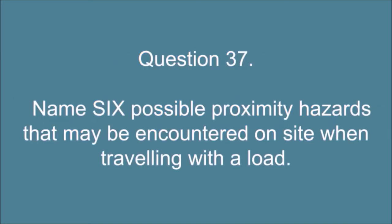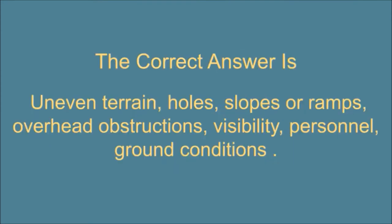Question 37. Name six possible proximity hazards that may be encountered on site when traveling with a load. The correct answer is: Uneven terrain, holes, slopes or ramps, overhead obstructions, visibility, personnel, ground conditions.